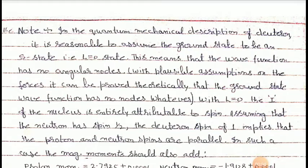We have almost completed the study of the deuteron problem. In this last topic of the chapter, I would like to discuss what the magnetic moment value of the deuteron tells us. The experimental determination of the magnetic moment of any nucleus is very important.